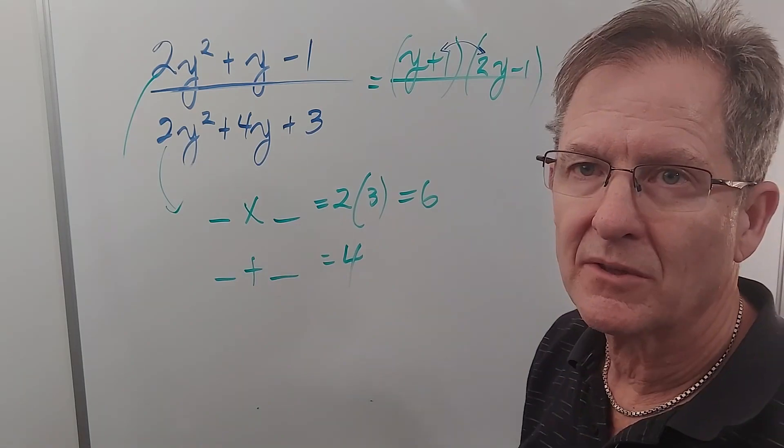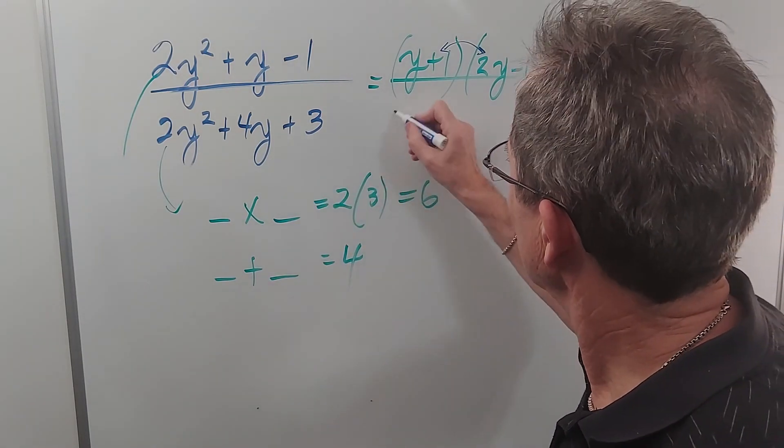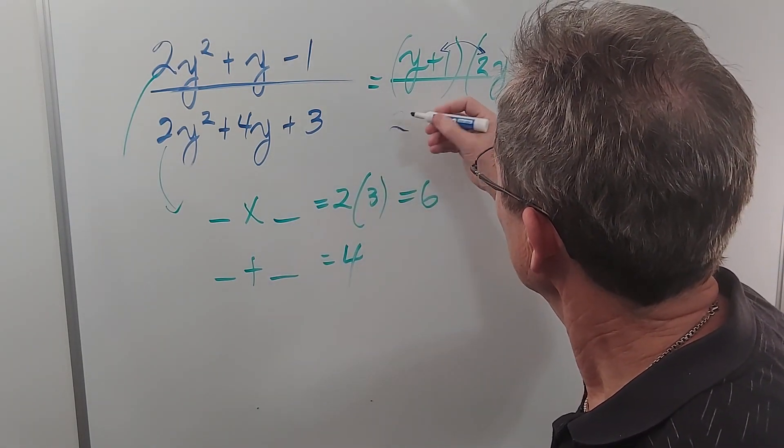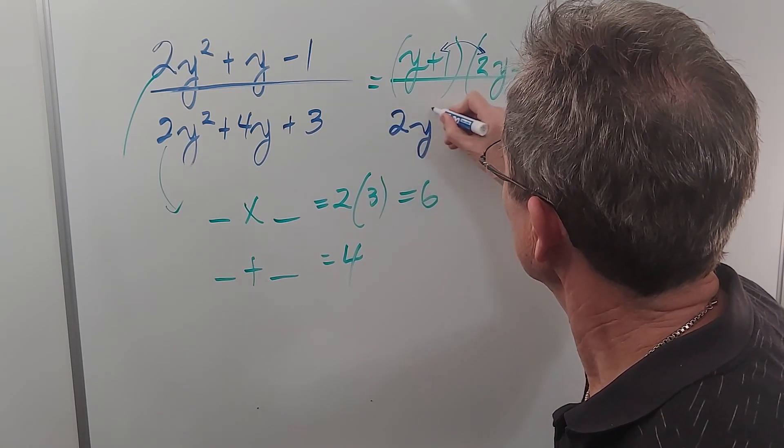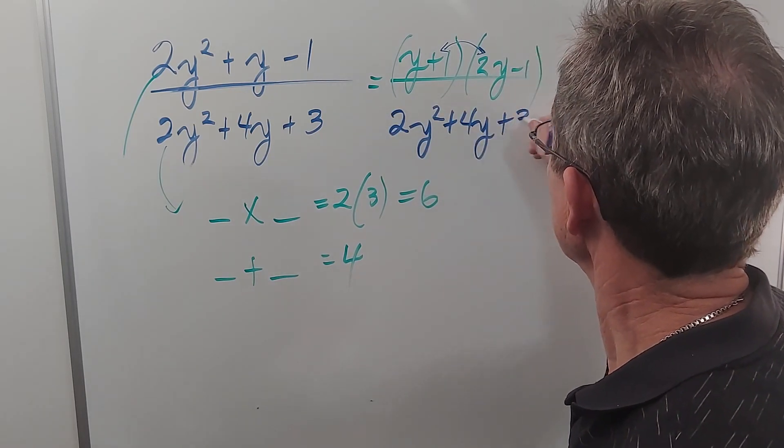Oh, you're right. It turns out there are no numbers that work. So we just keep this the same: 2y² + 4y + 3.